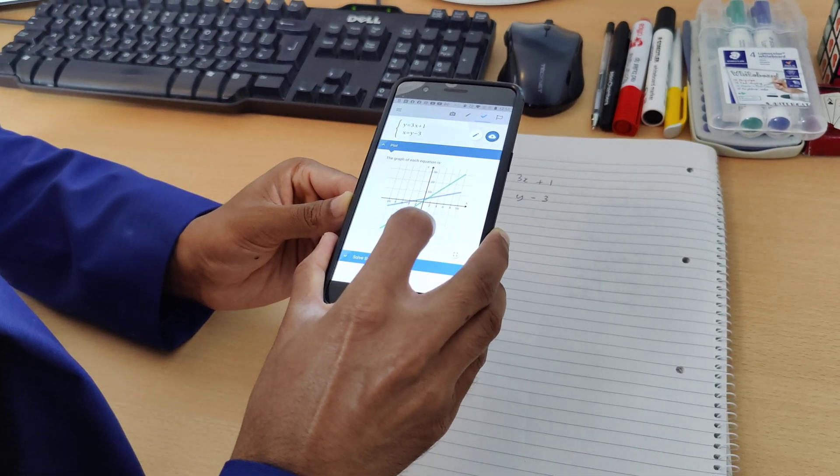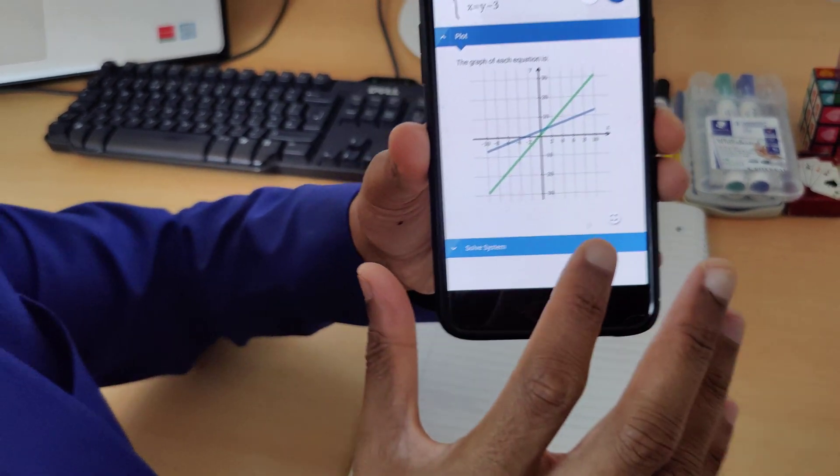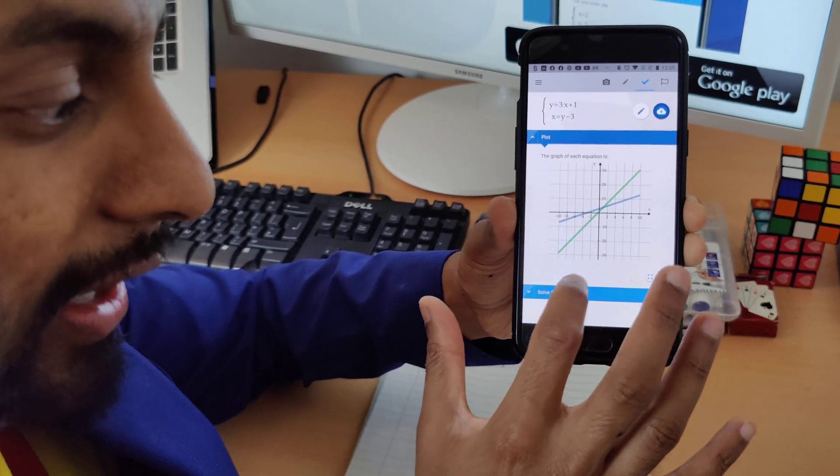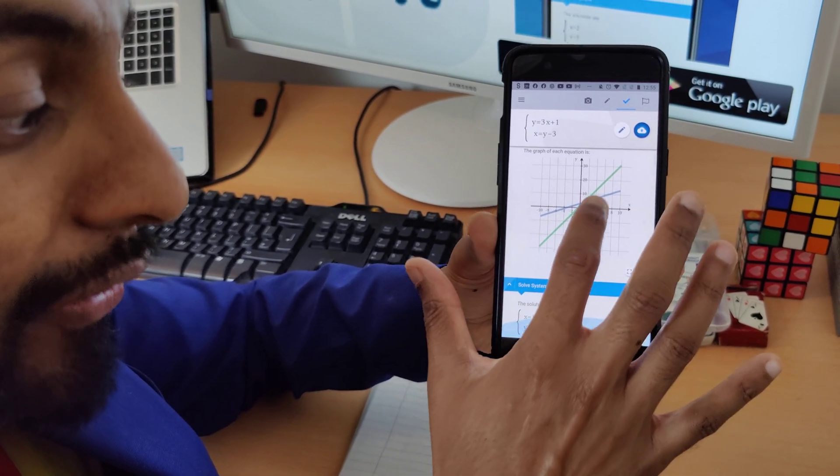You can actually take an image of the shot. It scans it and then it actually plots the equation for you with the lines, the graphs, then it can solve it for you.